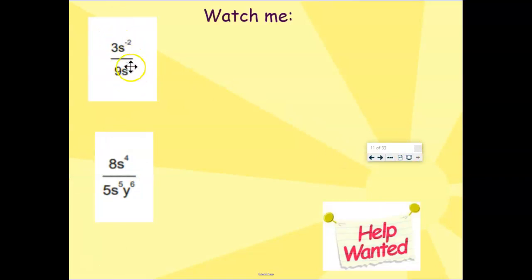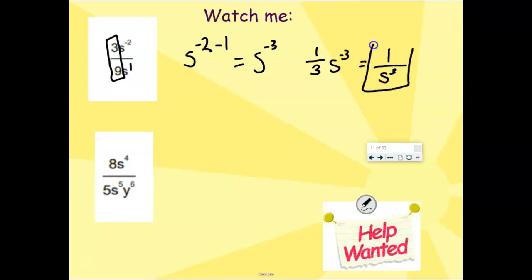We have our base the same here of the s. So we can just deal with the s first. We have s. We have a secret 1 here. We have s to the negative 2 minus 1. So we have s to the negative 3. If we look at my beginning part up here of the 3 over 9, that simplifies down to 1 3rd. So we can think of it as 1 3rd s to the negative 3. Or we can throw that negative 3 into the upside down, and we can put 1 on top and s to the 3rd power on the bottom. That's even better.